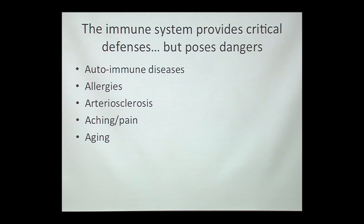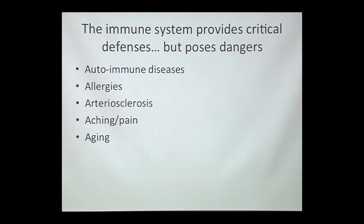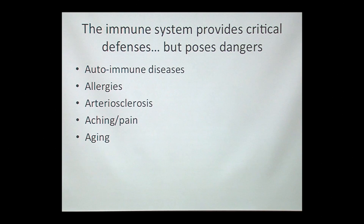There are five A's here. Some of the important ones are autoimmune diseases — things like lupus, rheumatoid arthritis — allergies, something I think all of us have experienced in different ways. Arteriosclerosis in many ways is really an inflammatory process that happens in our blood vessels. Aching and pain also is often an inflammatory process, and inflammation is really a key component of the aging process.